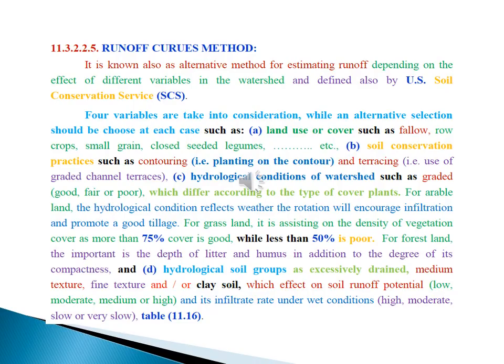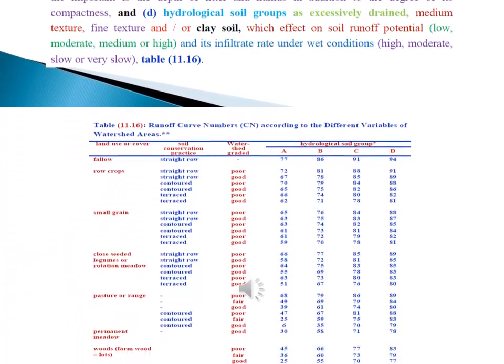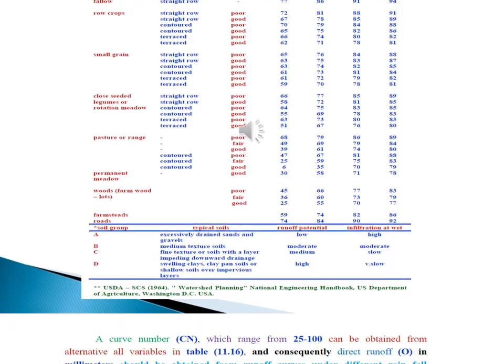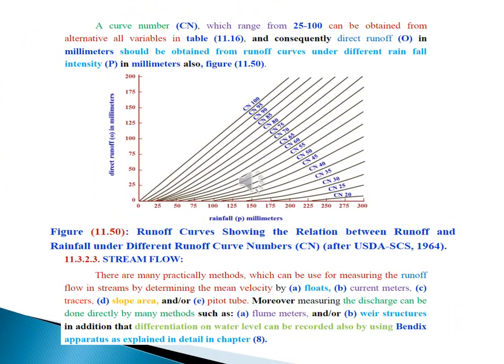Runoff Shiro's method. Really, it is known also as an alternate method for estimating runoff, depending on the effect of different variables in the watershed that is defined also by U.S. Soil Conservation Service, as shown in the enclosed table. Table showing runoff curve numbers according to the different variables of watershed area. Figure showing runoff curves showing the relation between runoff and rainfall under different runoff curve numbers. Moreover, there are many practical methods which can be used for measuring the runoff flow in streams by determining the beam velocity by different methods which are planned before.